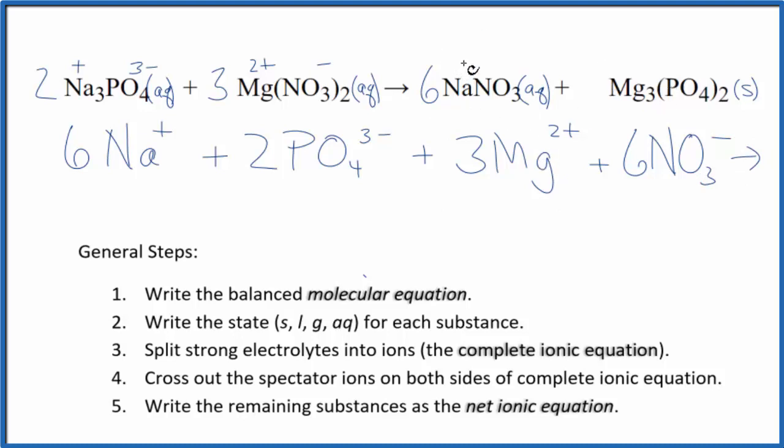For the products, we have a positive and a negative, so 6 sodium ions just like the reactants, plus 6 nitrate ions.